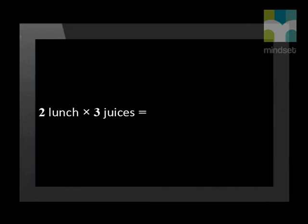Thus, we have six different outcomes that can occur. Another shorter method, without having to draw a tree diagram, is to take all the different types of choices and multiply them with each other. Two lunch options and three juice options gives us an answer of six different outcomes. We call this method the fundamental counting principle.